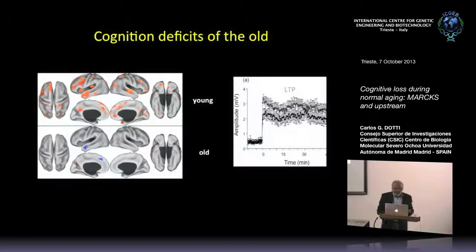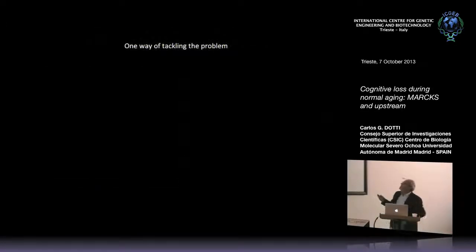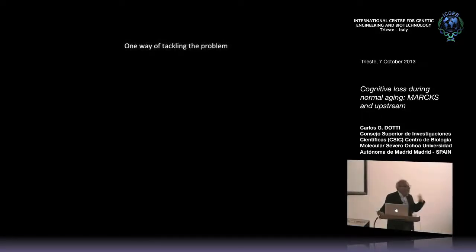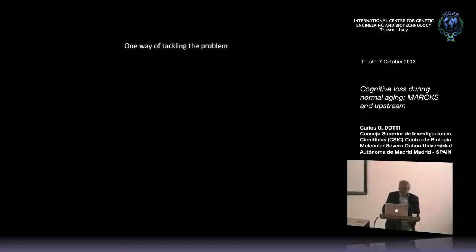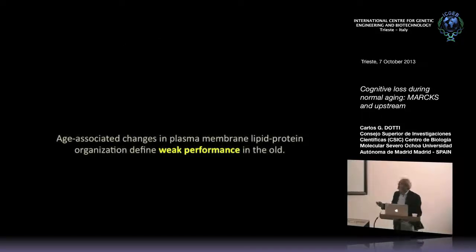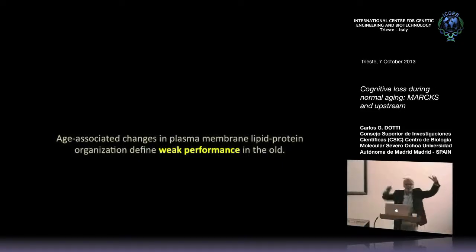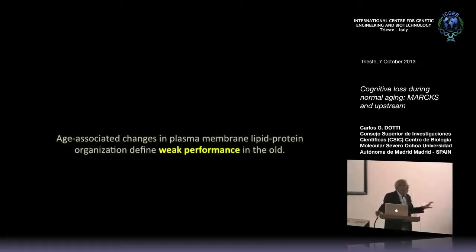We have to tackle this problem. My idea is I want to understand what is leading to our losing abilities of retaining and learning. One way of tackling the problem was to look at plasma membrane domains. I wanted to know about plasma membranes because they are very upstream of the onset. So we lose abilities — cognitive function — because as we age we are losing lots of different things. Aging is a very comprehensive process.